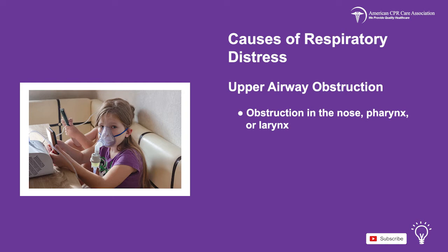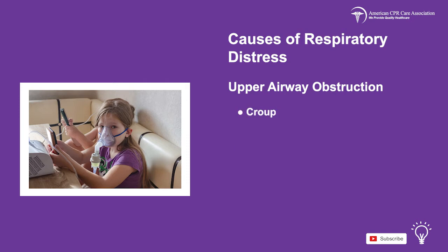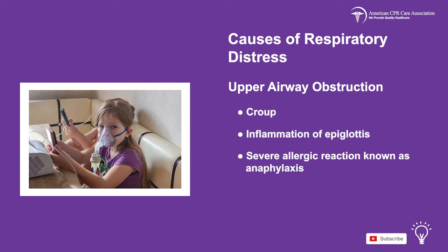An obstruction in the upper airway can have multiple causes, such as aspiration of a foreign body into the lungs, swelling of the upper airway tissue, a tumor or abscess, croup, inflammation of the epiglottis, severe allergic reaction known as anaphylaxis, or enlarged tonsils.